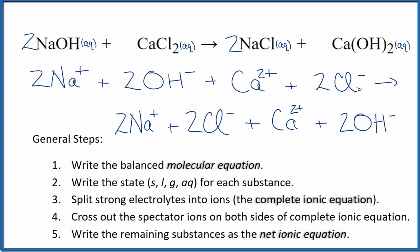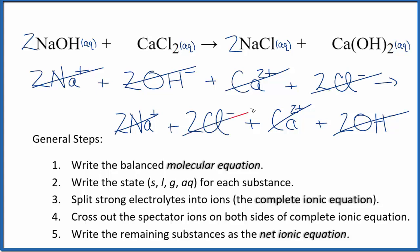This is the complete ionic equation, where we split up all of the strong electrolytes, which is everything here. You'll notice in the reactants on the top and products on the bottom, we have two sodium ions on each side — those are spectator ions, we can cross those out. Two hydroxide ions, the calcium ion, and two chloride ions also appear on both sides. Everything crosses out, meaning we start with all of these ions and end with the same ones.